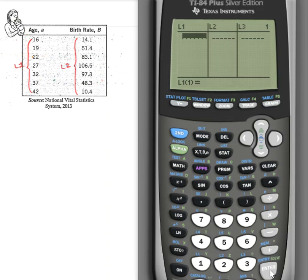Keep in mind that L1 is where your independent variable values go. With this table here, we can assume that the age is the independent variable and that the birth rate B is the dependent variable. So basically, these are all your X values, or the values that will go into L1, and these will be all the Y values, or values that go into L2.